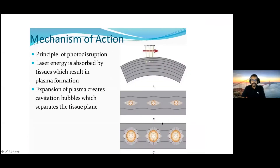What is the mechanism of action of the femtosecond laser? It is based on the principle of photo disruption. The laser energy is absorbed by the tissue, which results in plasma formation, as you can see in the diagram. The expansion of the plasma creates cavitation bubbles which separate the tissue plane, as you can see in the image — the separation takes place by these small cavitation bubbles emitted by the femtosecond laser.